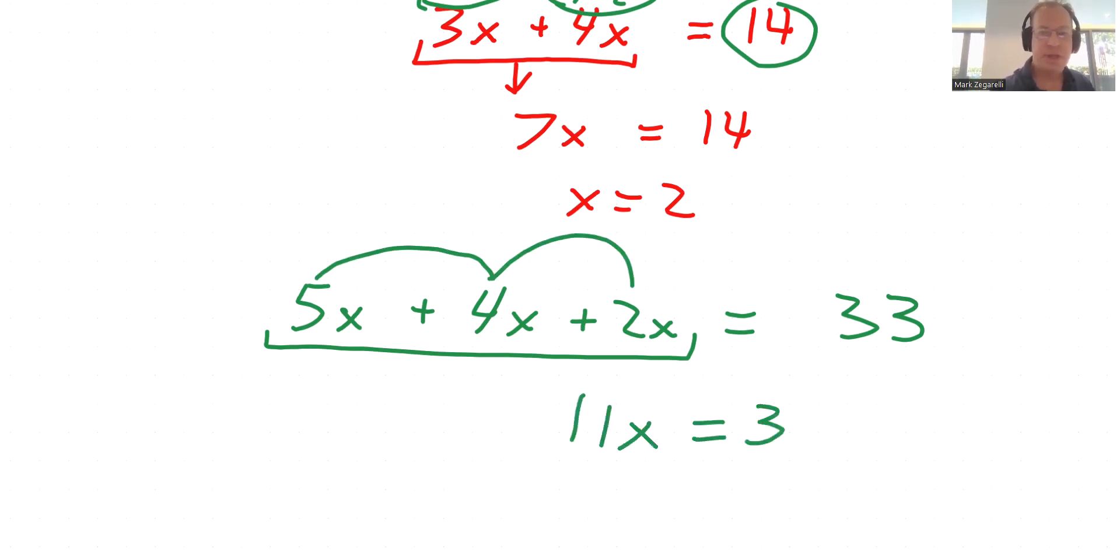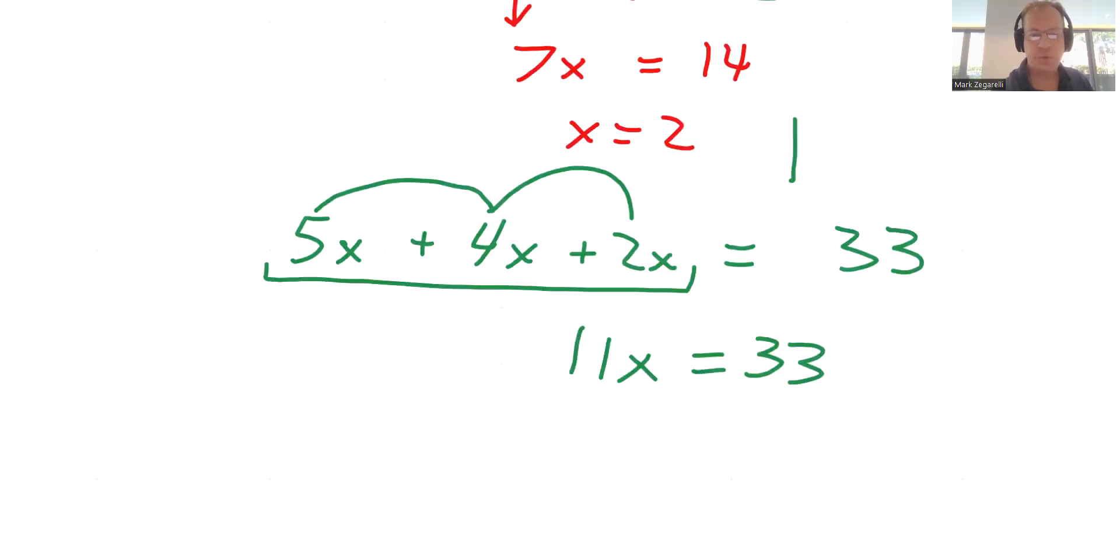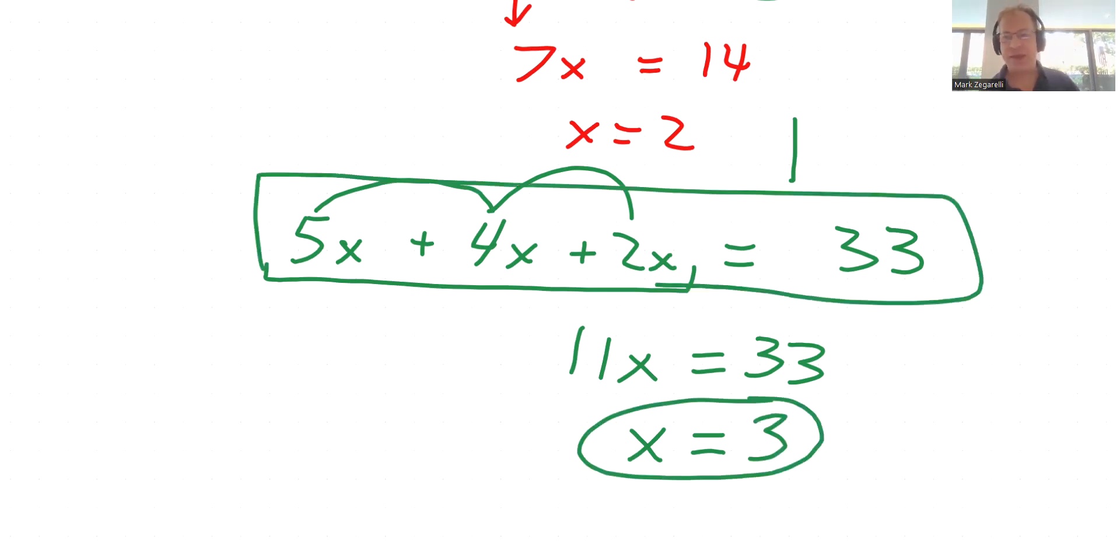At this point, you may find it a lot easier to notice that 11 times what equals 33? x equals 3. And that's our solve. So we're taking more and more complicated equations, and we're still managing to find out what that x is.